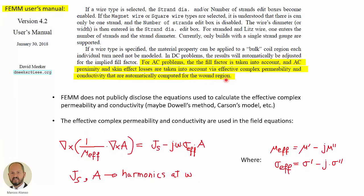So this is something that FEMM does internally. If we read the manual, we will see that FEMM does not publicly disclose the equations used to calculate the effective permeability and conductivity. And then the program uses the effective complex permeability and conductivity in the field equation. So this is the equation that the program has to solve. Here we have the effective complex permeability and the effective complex permittivity. And the program uses time harmonic analysis. So J sub S and A are the source current density and the vector potential at the different frequencies.